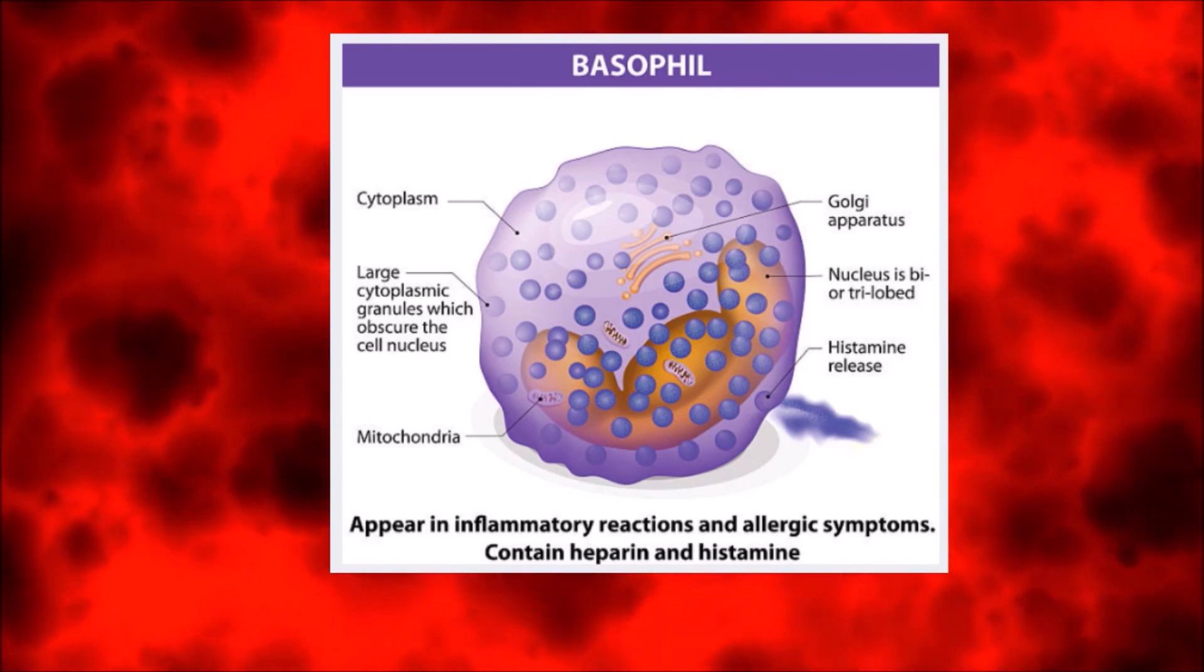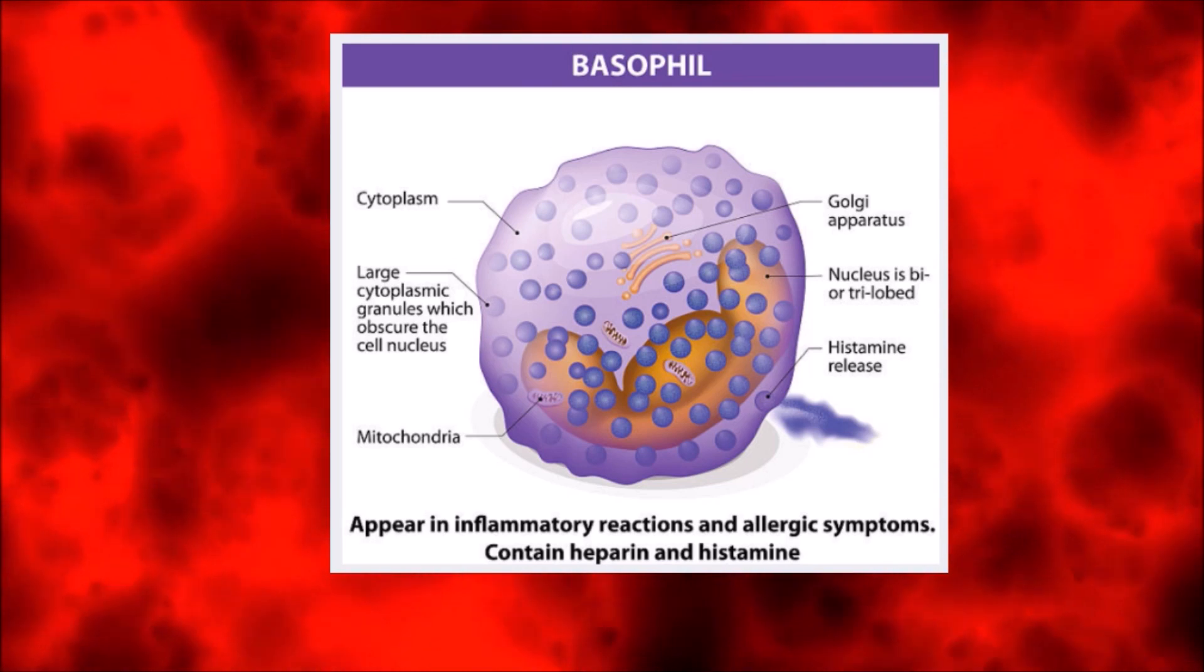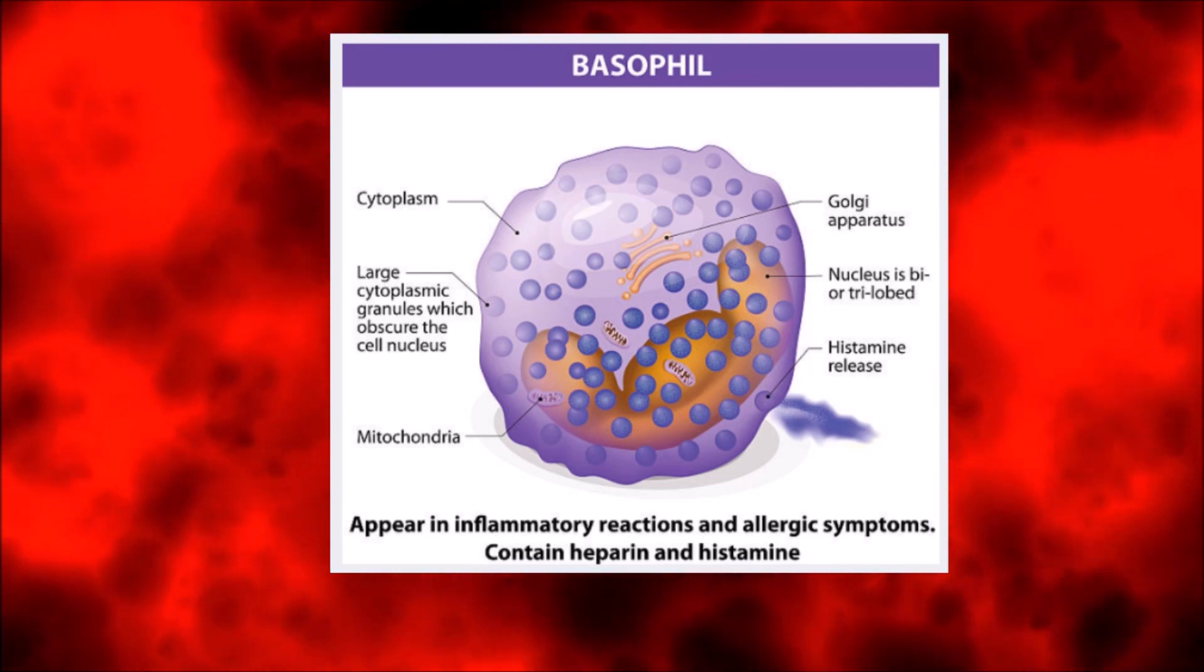Basophils store natural histamine and also the glycosaminoglycan heparin, and they defend the body against parasites and other disease-causing microorganisms.